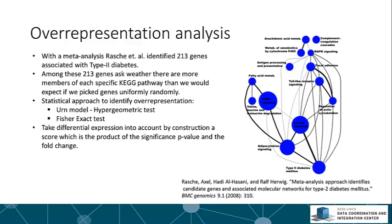On the right, there's an illustration of the results of this analysis. The authors tested all KEGG pathways and identified all those that are significantly over-represented in their 213 genes, illustrated in the figure on the right. The question of over-representation is a statistical one, and there are a number of different statistical approaches. We're going to look at a couple of formulations: representing it as a URN model and using the hypergeometric test, and also looking at the problem from the point of view of a Fisher-Exact test.